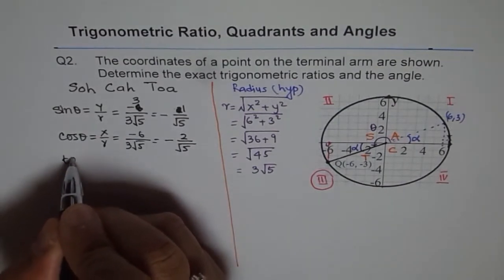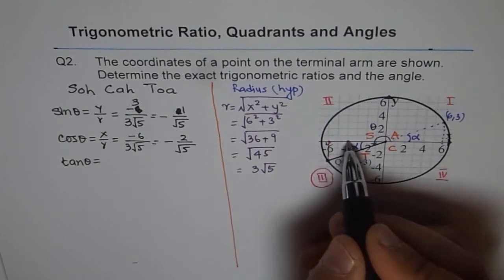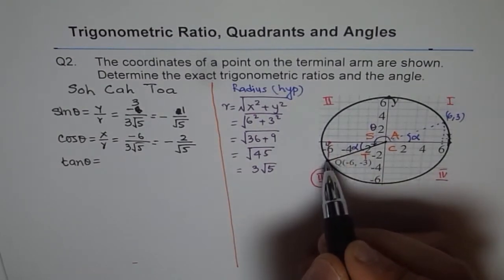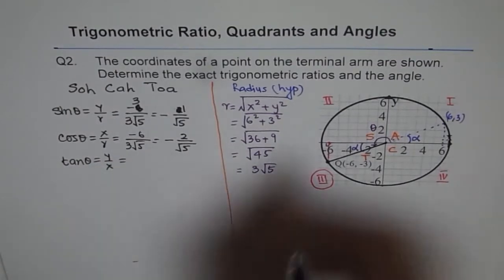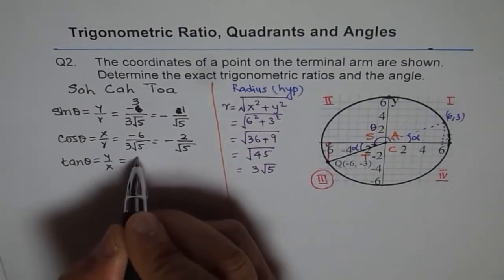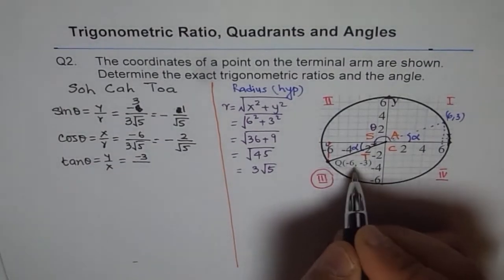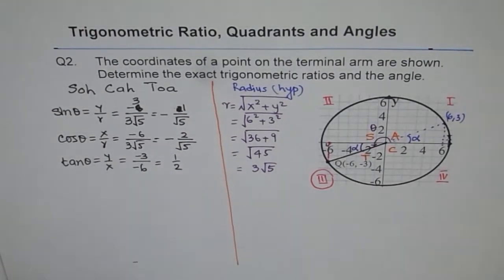Now let's find out tan theta. Tan theta for us is opposite over adjacent. Opposite side is minus 3. So just let me write first y over x. Opposite over adjacent. That is y and this is x. So y value is minus 3. So we get minus 3 over x, which is minus 6. And so we get half. So that is the value of tan theta, half.